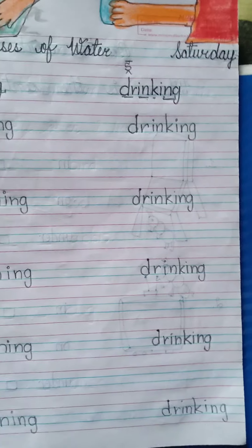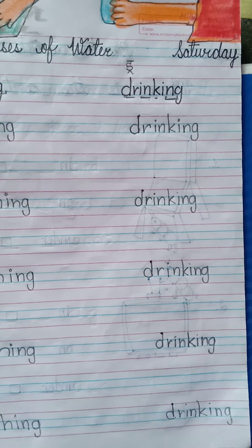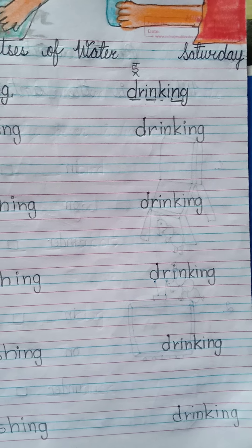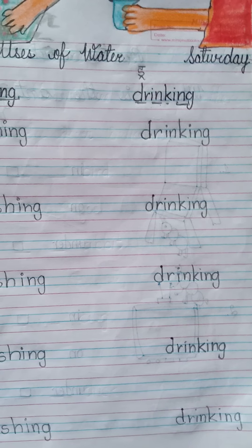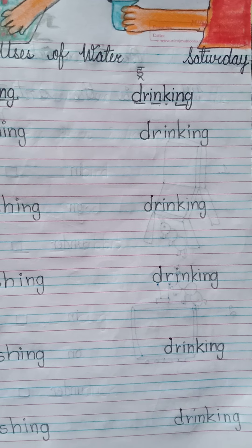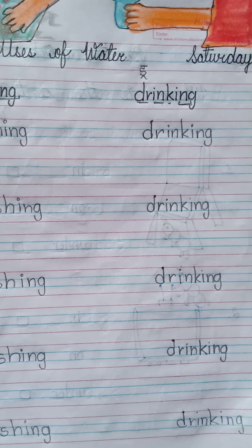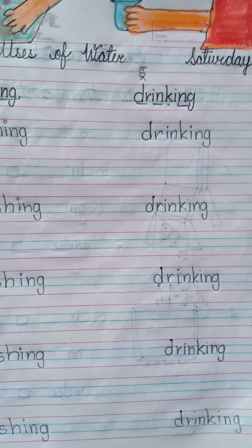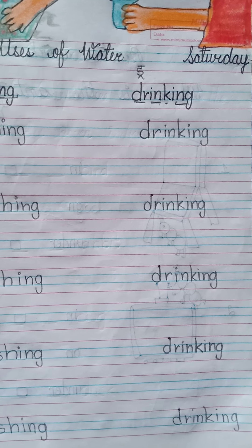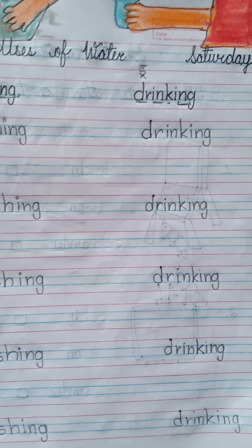And the spelling of drinking is: D, R, I, N — IN — K — drink — I, N, G — ING. Drinking.